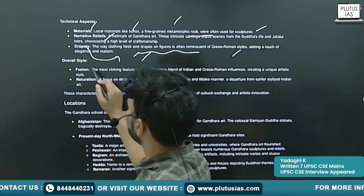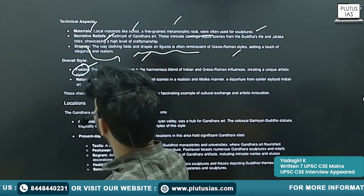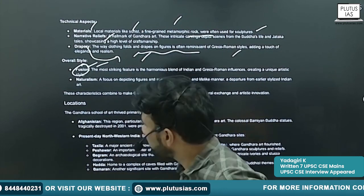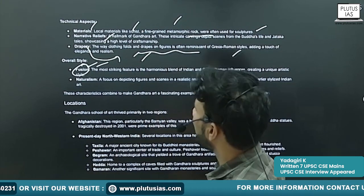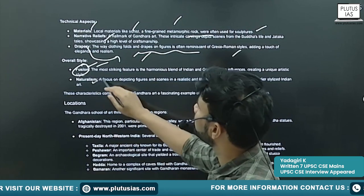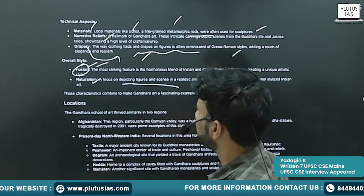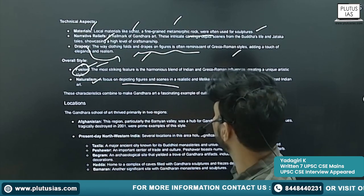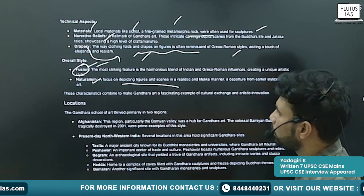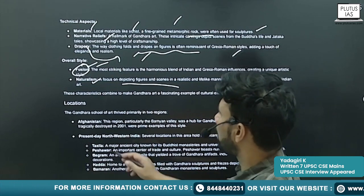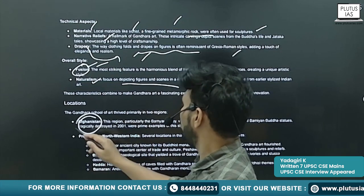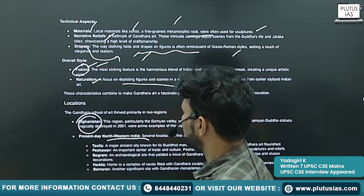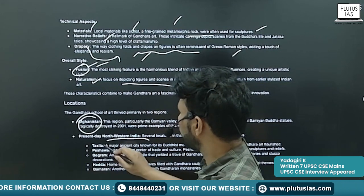Overall, there is a fusion of the Indian and Greco-Roman traditions. Naturalism — you will see depiction of natural figures in this art. Locations include Afghanistan and present north-western India.